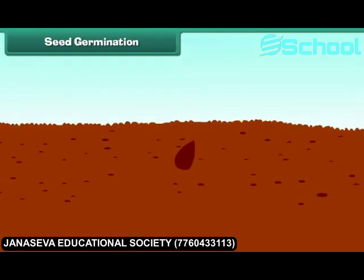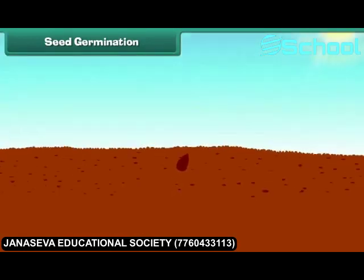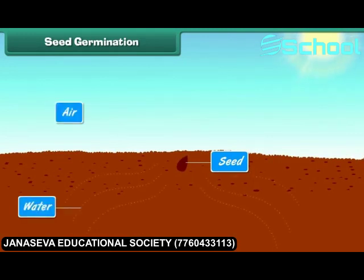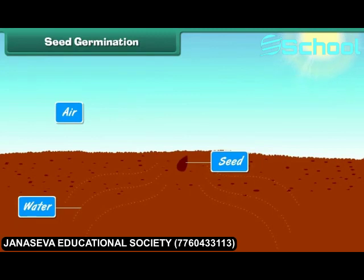Seed germination: Seeds start germinating in favourable conditions. Water, air and warmth are required for a seed to germinate. When a seed absorbs water, it swells up and the seed coat becomes soft.